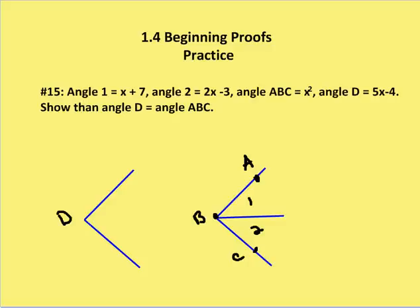In the next problem, number 15, we're given that angle 1 is x plus 7, angle 2 is 2x minus 3, angle ABC is x squared, and angle D is 5x minus 4.